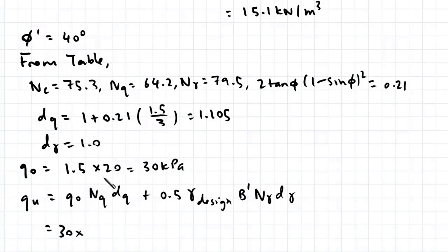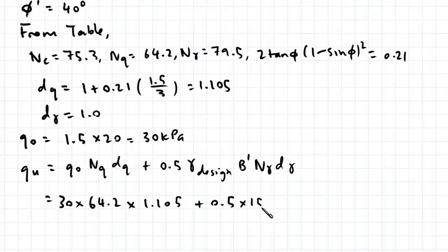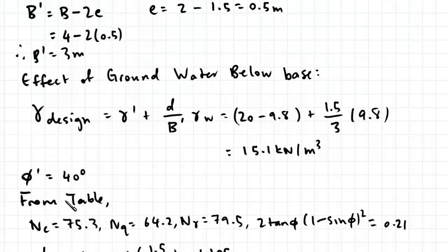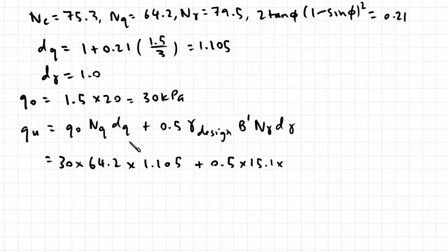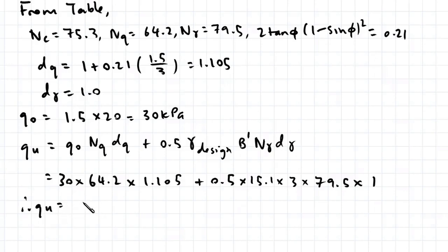So this is 30 multiplied by 64.2 times dq, 1.105, plus 0.5, gamma design, that's 15.1, our effective width 3 meters, multiplied by Ngamma which is 79.5, 79.5 multiplied by dgamma which is just 1. So therefore, our ultimate bearing capacity is 3928.9 kPa.